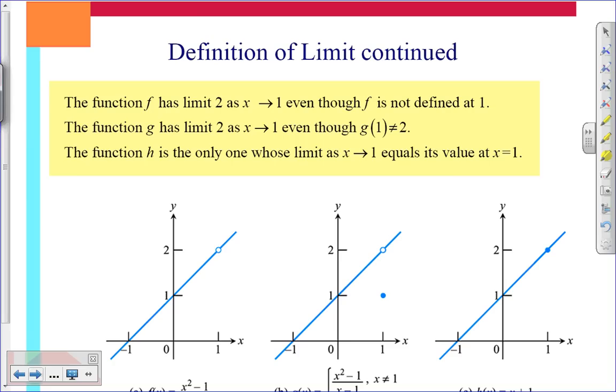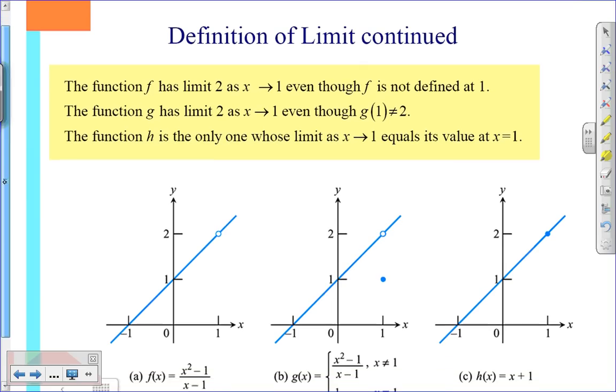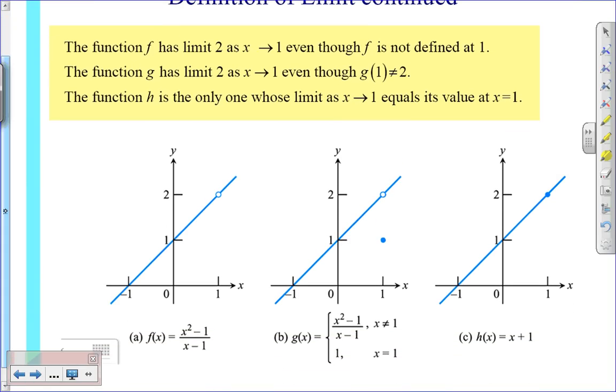Now here are three examples that further explain this definition. So if we look at the first example f of x. Now the function f has a limit to 2 as x approaches 1. So if we look from the left and the right, we are approaching the output of 2. However, notice that f of 1 is not defined for this function, the value, but yet the limit is 2.